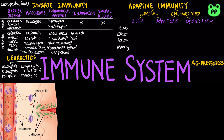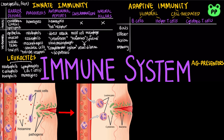During inflammation, mast cells release histamine and macrophages secrete cytokines. Both histamine and cytokines lead to vasodilation, making capillaries more permeable so that antimicrobial peptides and phagocytic neutrophils can enter to kill the bacteria. Pus refers to fluid rich in white blood cells, dead microbes, and cell debris.